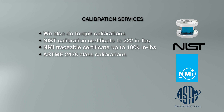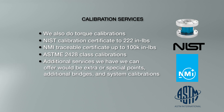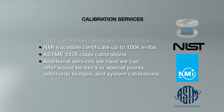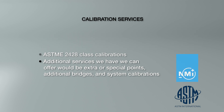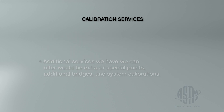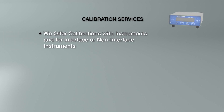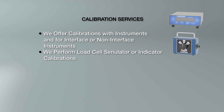The ASTM E2428 class calibration is 10 points, three runs, with rotation between each run. The calibration certificate will include curve fit plots, coefficients, and a lower load limit. Additional services we offer include extra or special points, additional bridges, and system calibrations. A system calibration is a combination of a load cell and an instrument loaded in the rig together — we can do that for Interface or non-Interface instruments. We also do instrument calibrations — if you have a load cell simulator or an indicator requiring an internal millivolt-to-volt calibration, we can perform those as well.